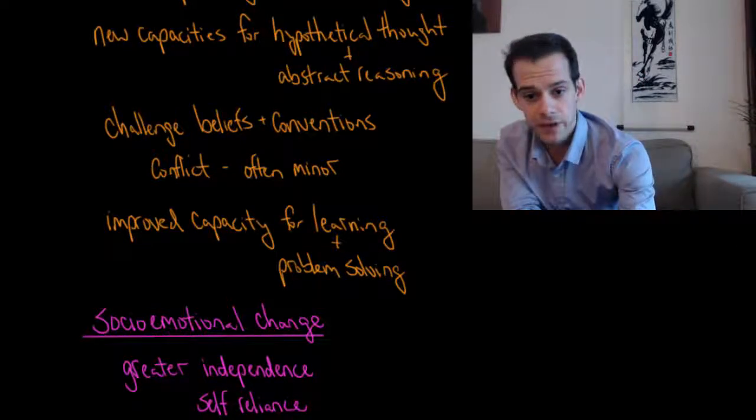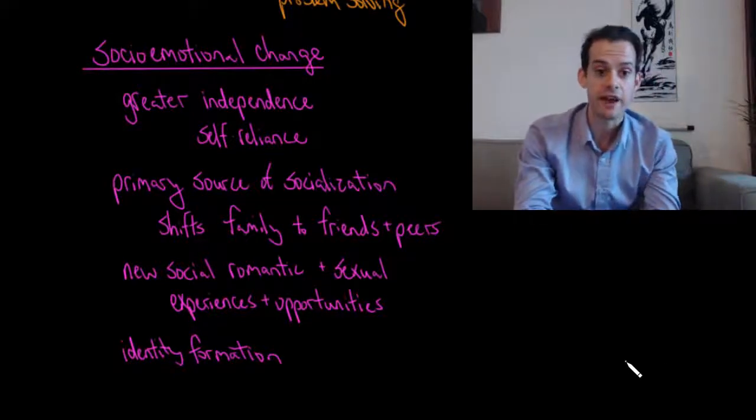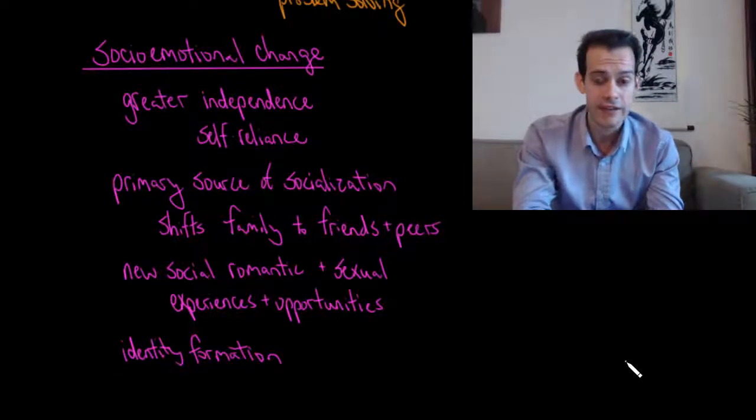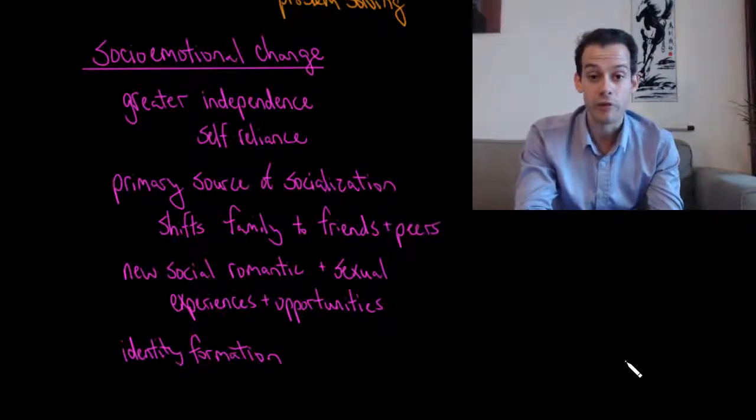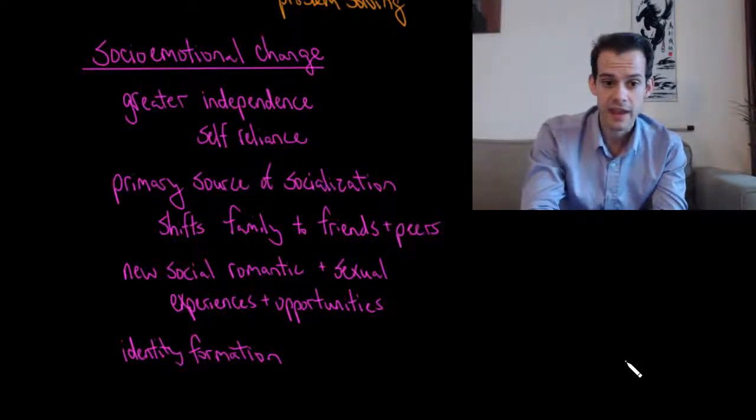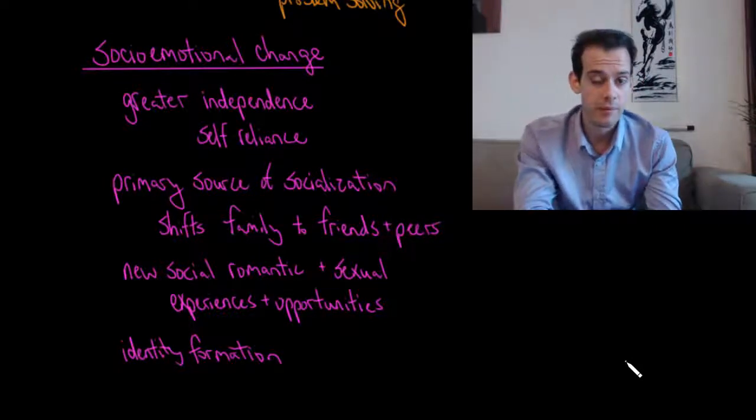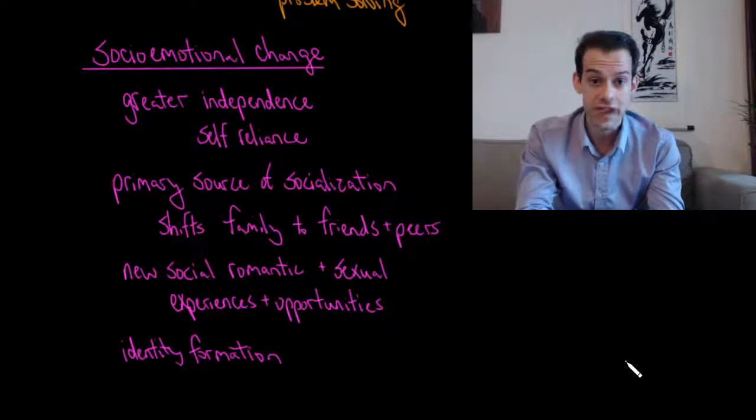We'll consider socio-emotional changes associated with adolescence. This is a time where teenagers find they have greater independence compared to earlier childhood. This means they also need to rely on themselves more. They have a greater need for self-reliance and are less dependent on their parents. The primary source of socialization also shifts from being mostly parents and family to being more focused on friends and peers.